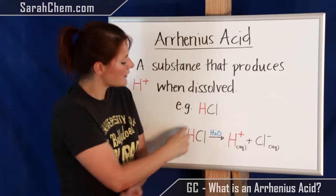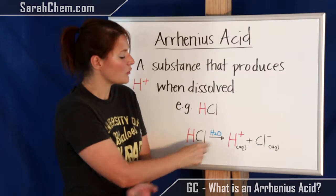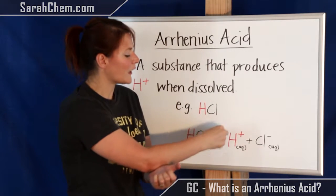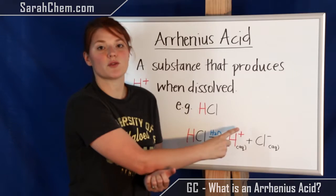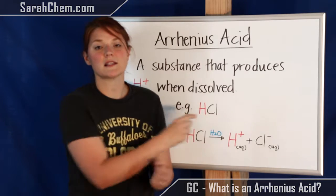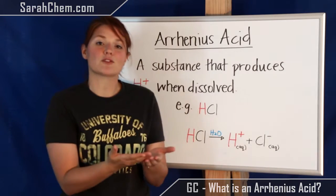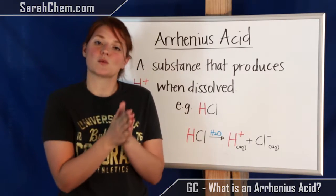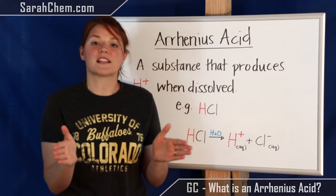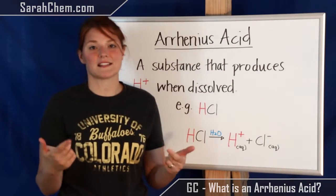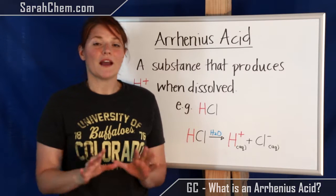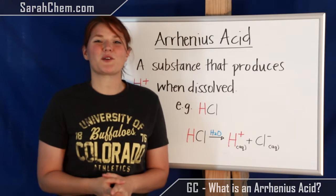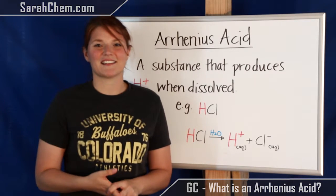So you can see that when you put HCl in solution, it's going to increase the concentration of H+, because it's a natural byproduct — it's one thing that it breaks into in its dissolution. And that's pretty much what an Arrhenius acid is.